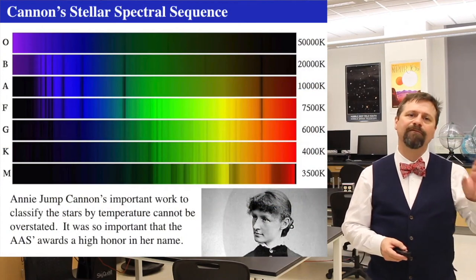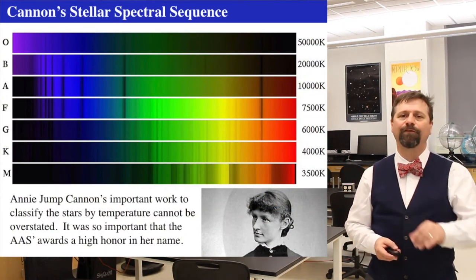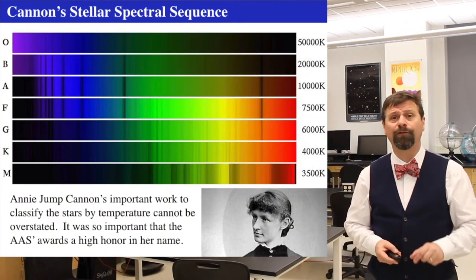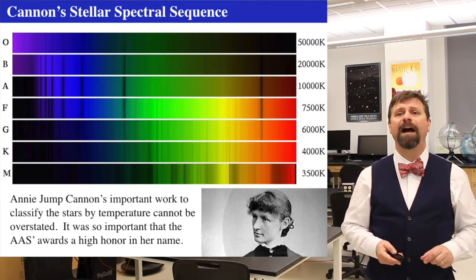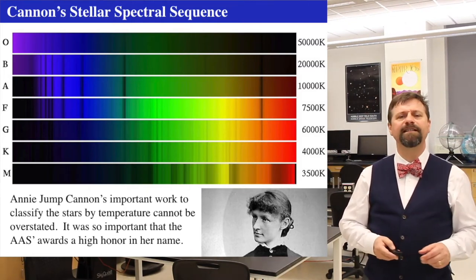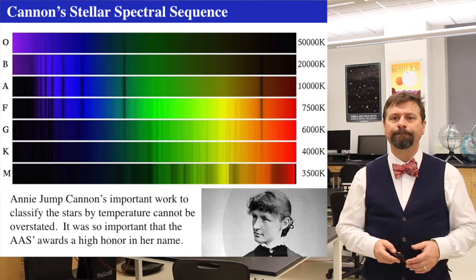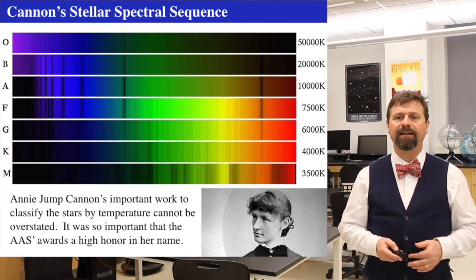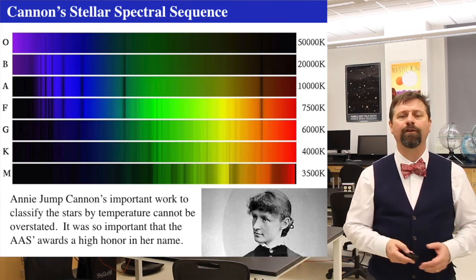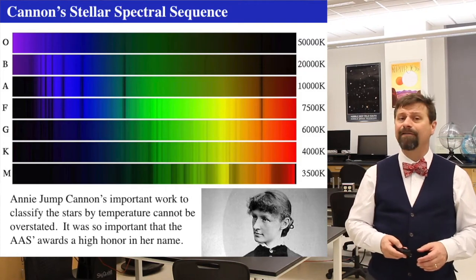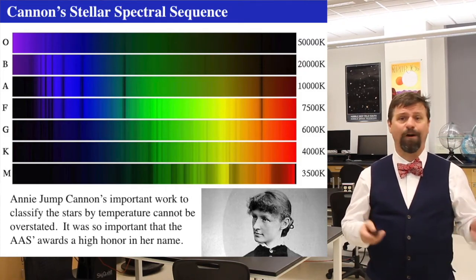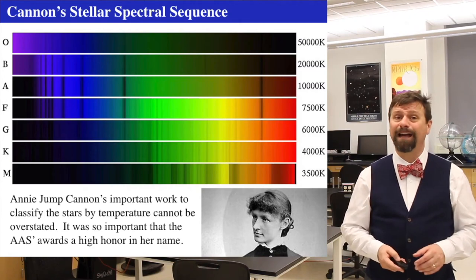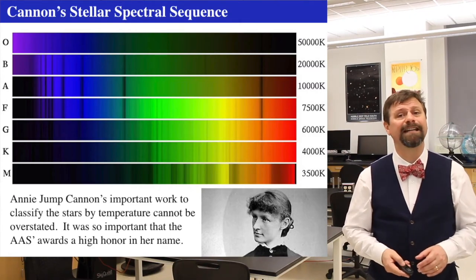Her fundamental discovery was that the stellar spectral sequence is a temperature sequence — you could organize stars from O stars as being hot to M stars as being cool. She used Wien's Law applied to black bodies to do it. She lived between 1863 and 1941, and over the course of her entire career, classified over a half million stars.